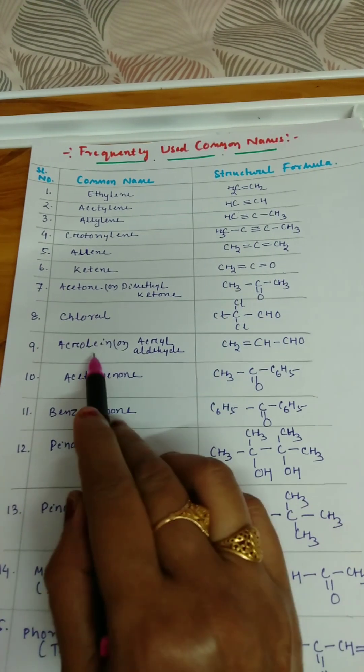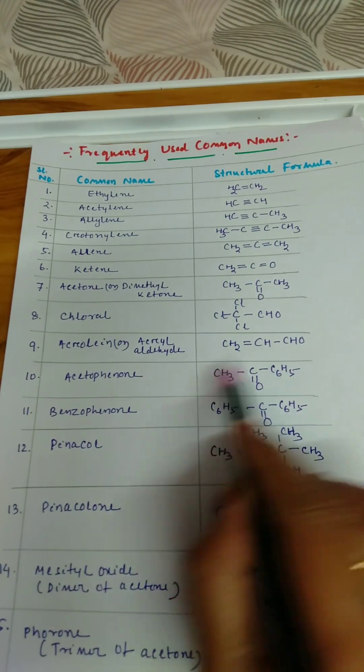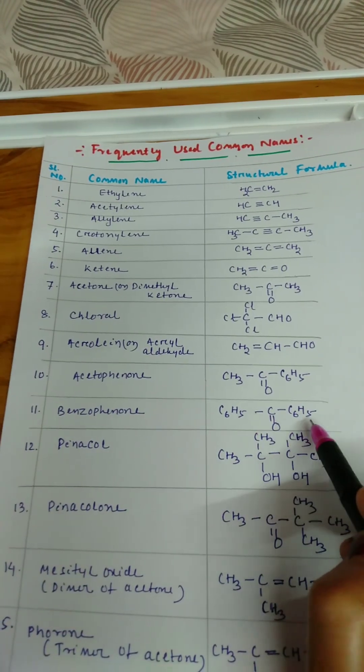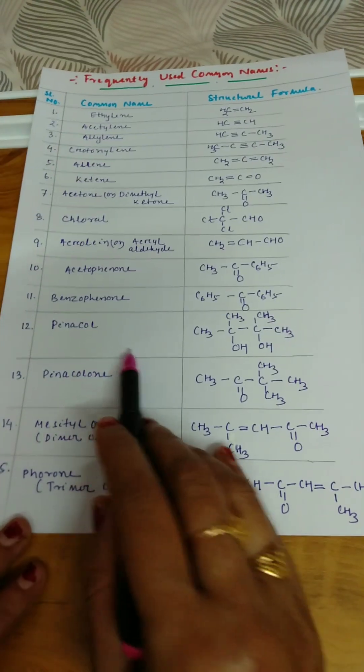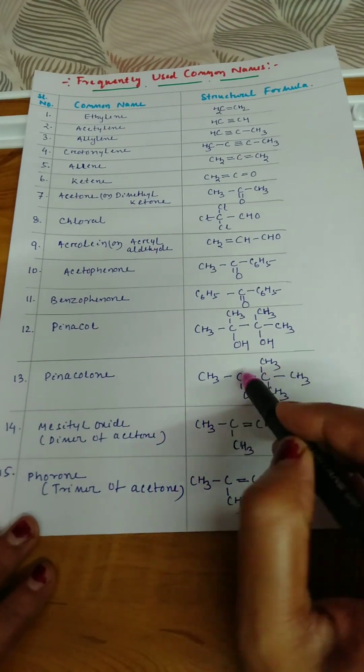Acetophenone C6H5-C=O-CH3, benzophenone C6H5-C=O-C6H5. Pinacol, this is the formula for pinacol. Pinacolone, the difference between these two is only the structure.